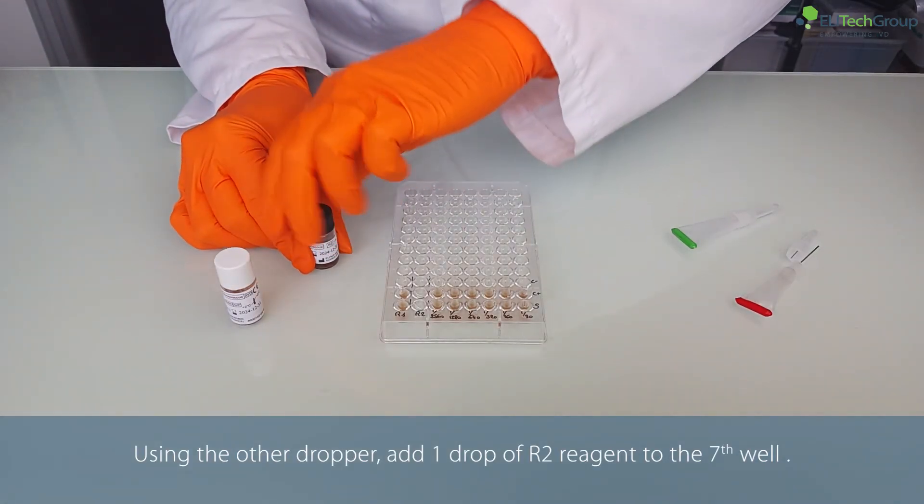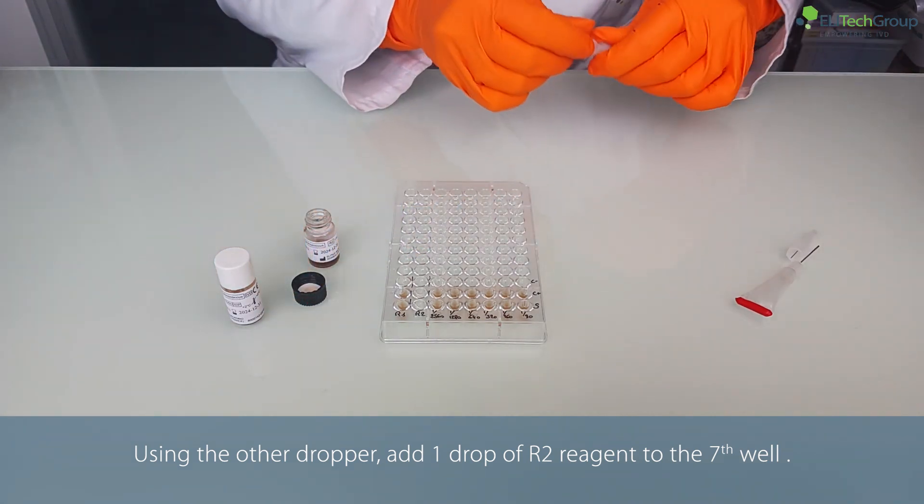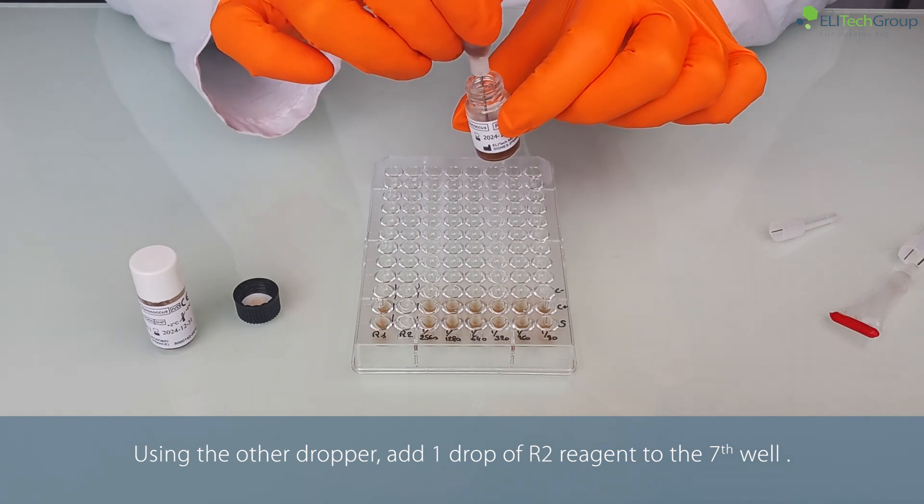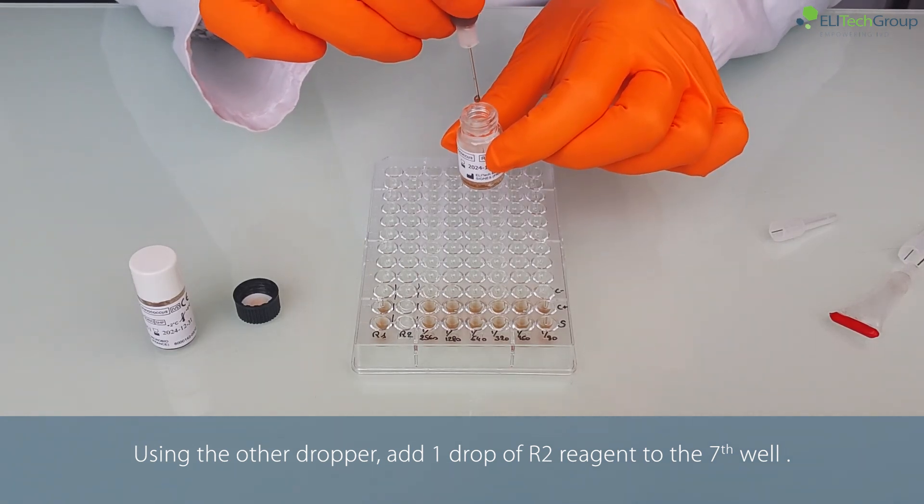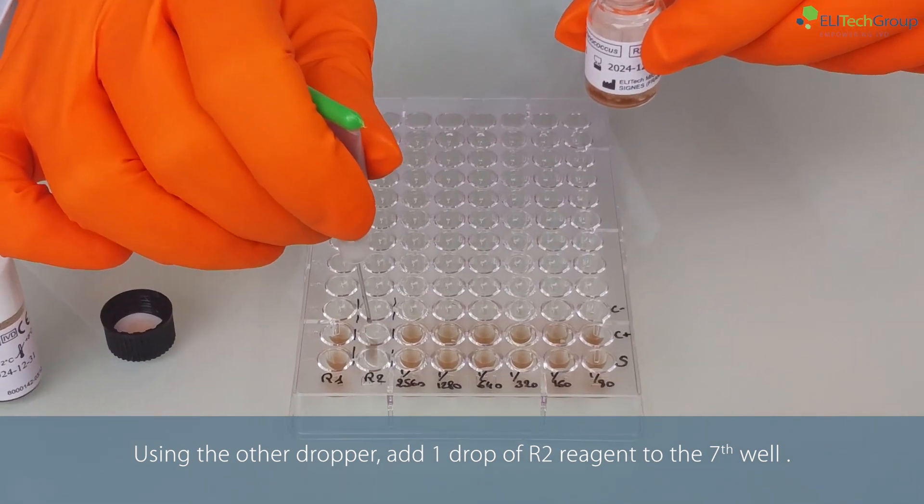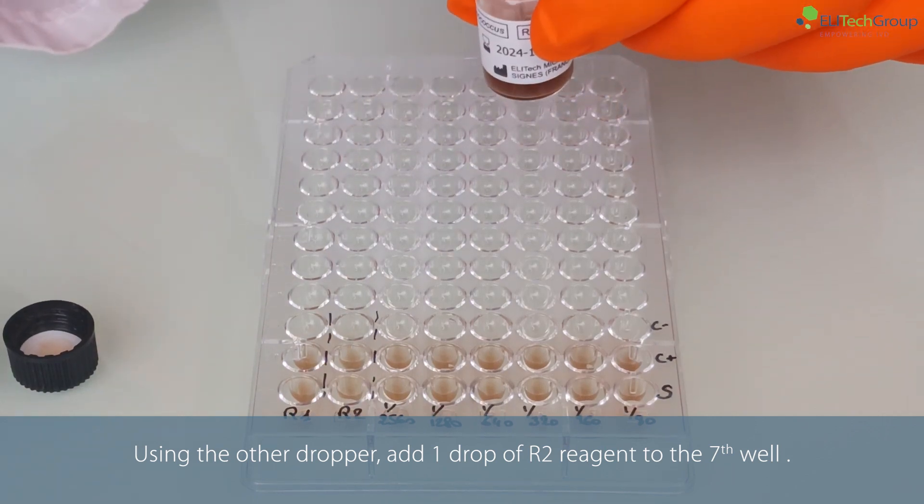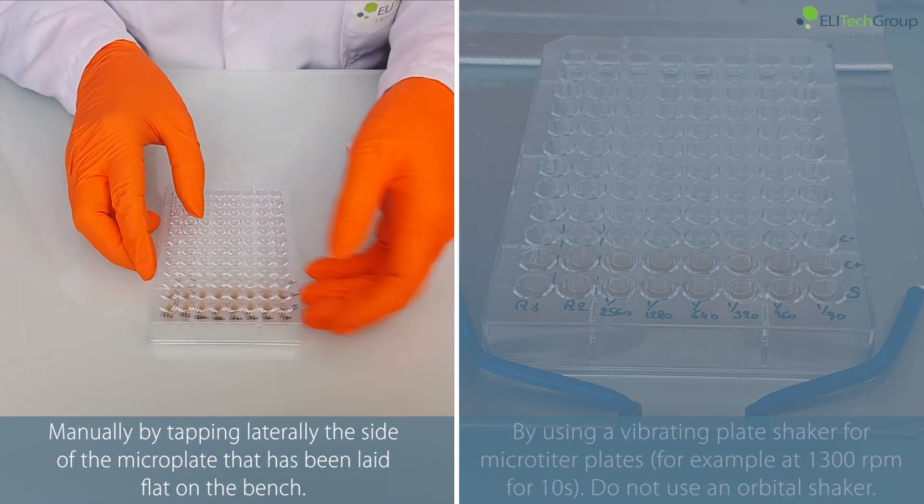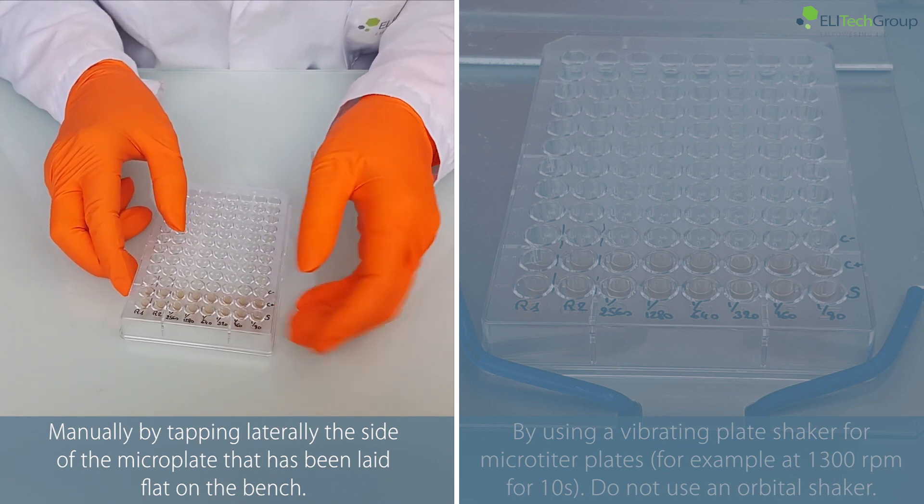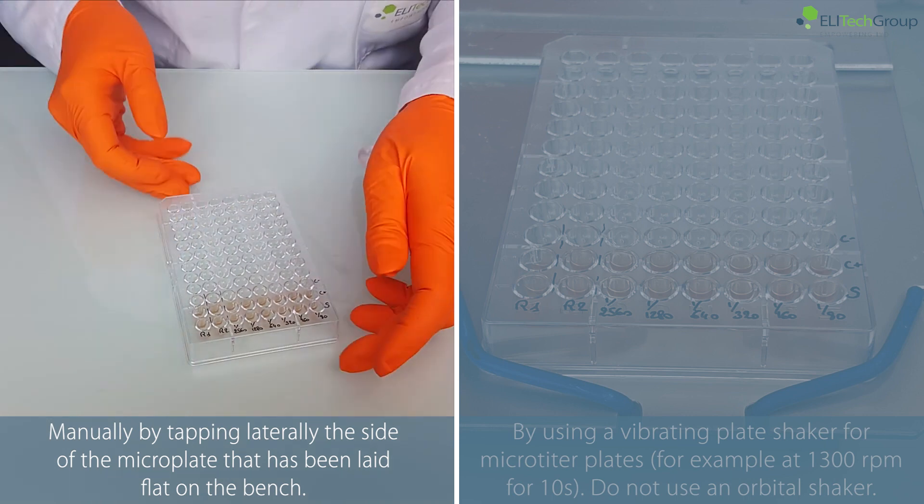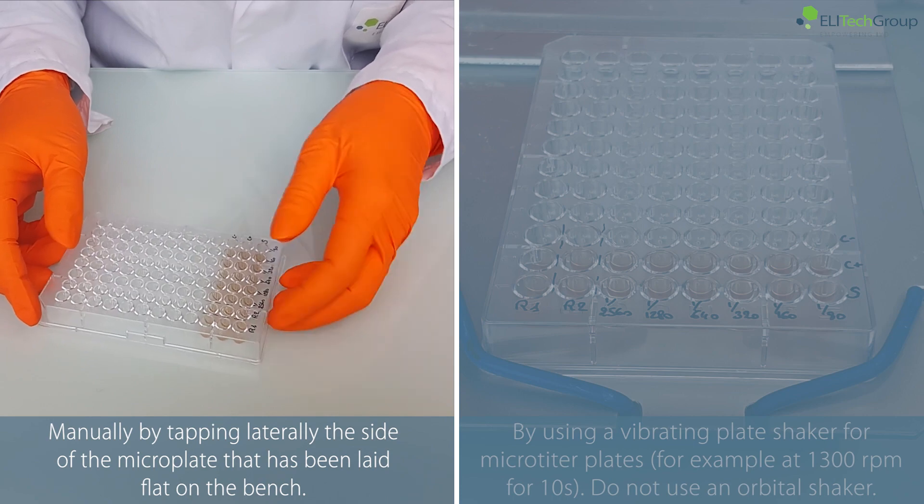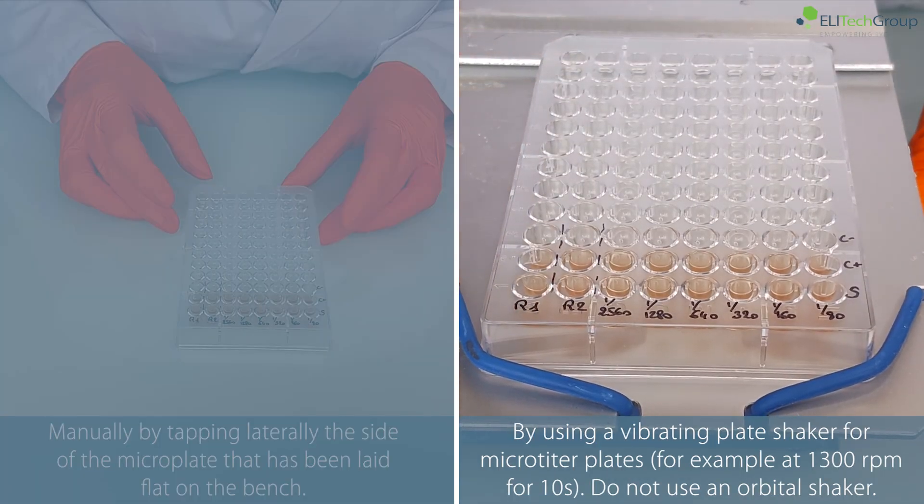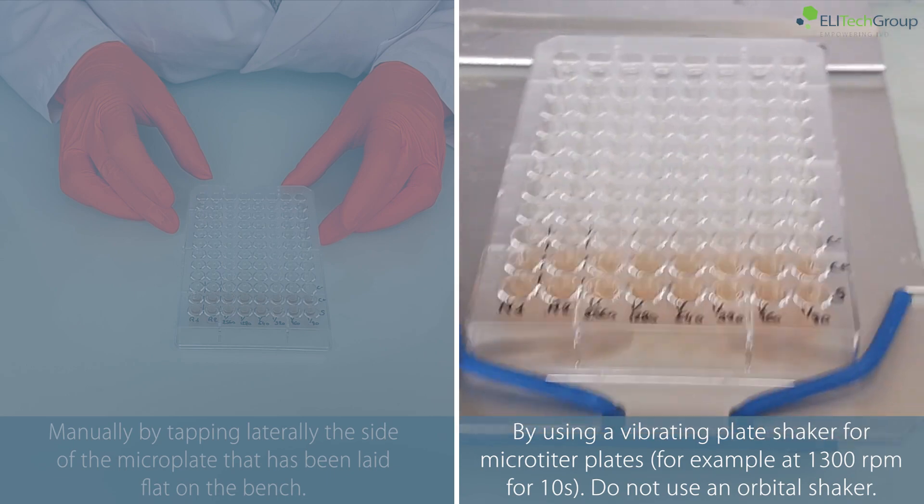Using the other dropper, add one drop of R2 reagent to the seventh well. Manually mix by tapping laterally the side of the microplate that has been laid flat on the bench, or by using a vibrating plate shaker for microtiter plates. Do not use an orbital shaker.